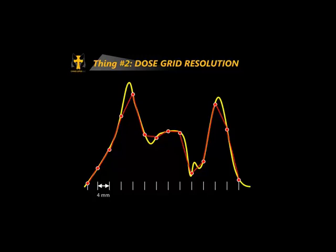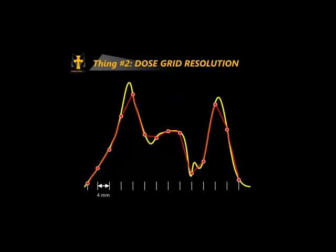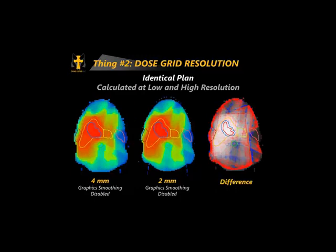Think about it: for most MLCs, leaf widths projected to isocenter are 5mm or 4mm — for some older MLCs, 10mm. For a Varian 120-leaf MLC, the center leaves are 5mm projected to central axis. If we're only sampling dose every 4mm, that's not nearly enough to capture the gradients. Here is an identical plan calculated at both 4mm and 2mm — the difference shows quite large dose variations. When you calculate at low resolution, then interpolate between dose grid points to get DVH or dose profiles, you throw away a lot of peaks and valleys.